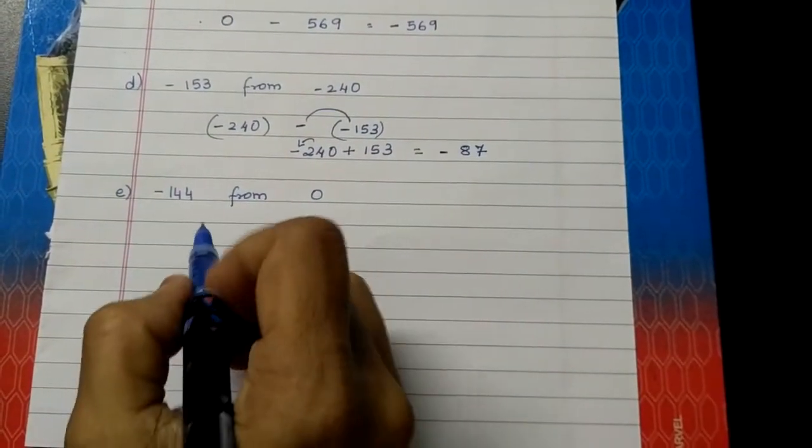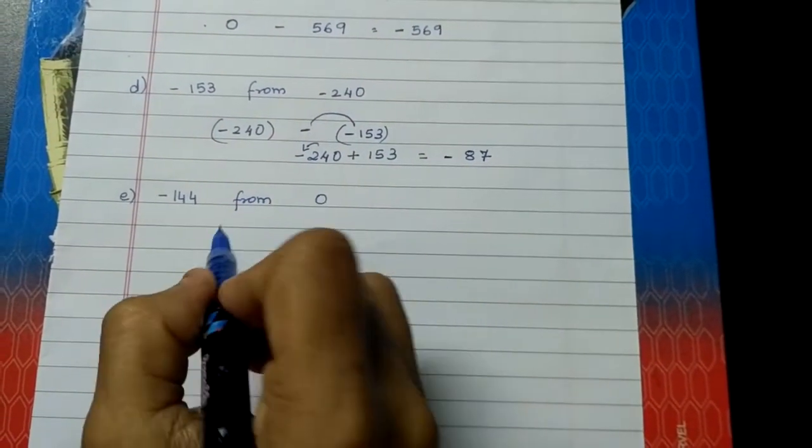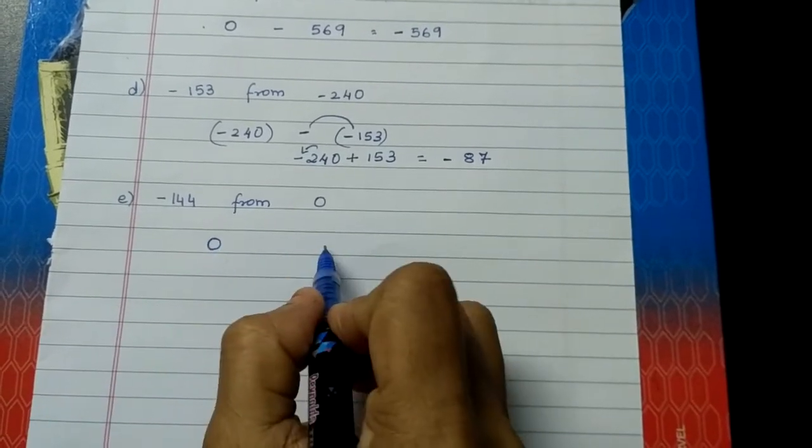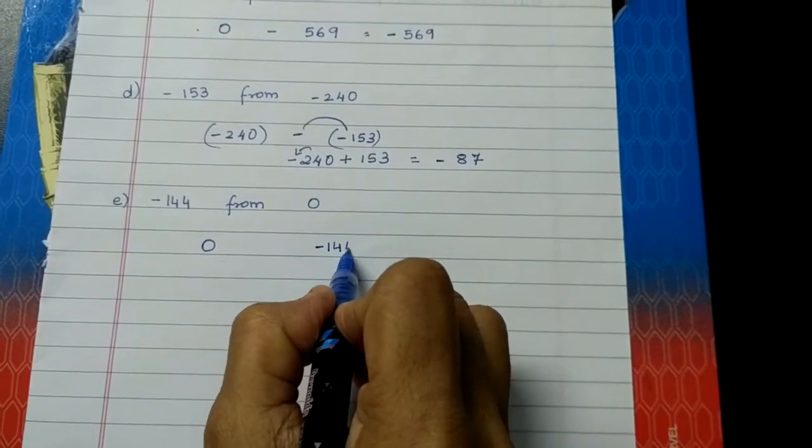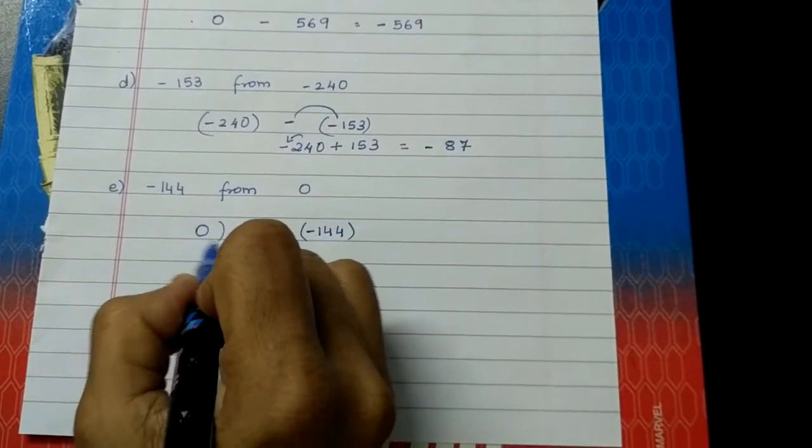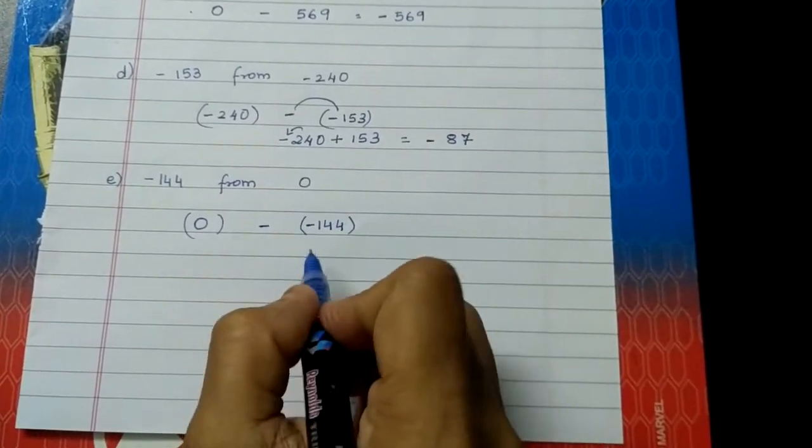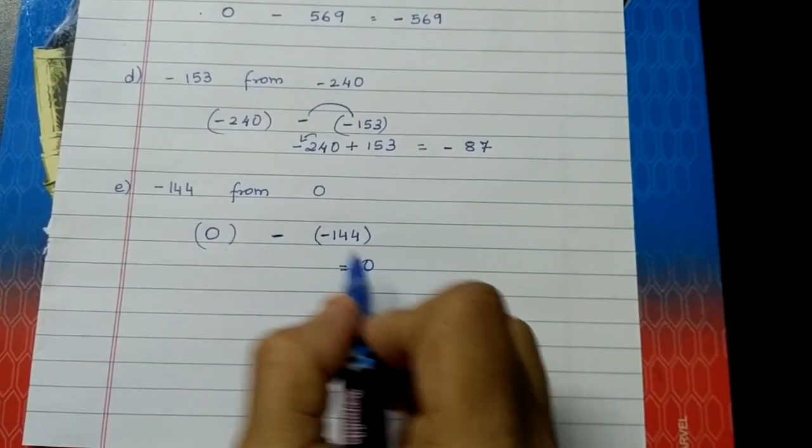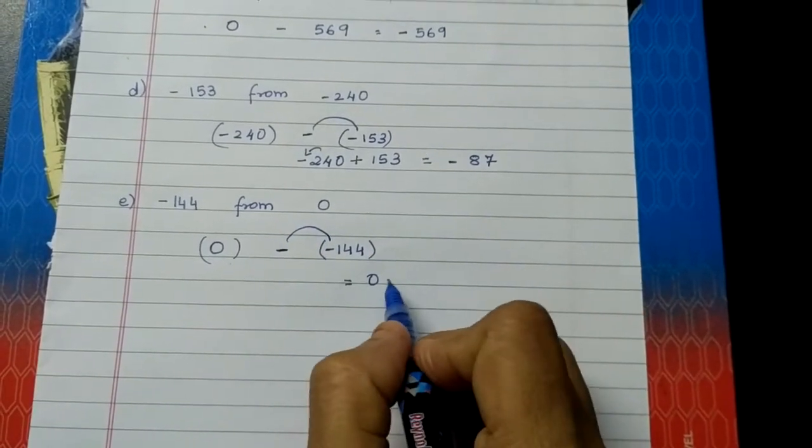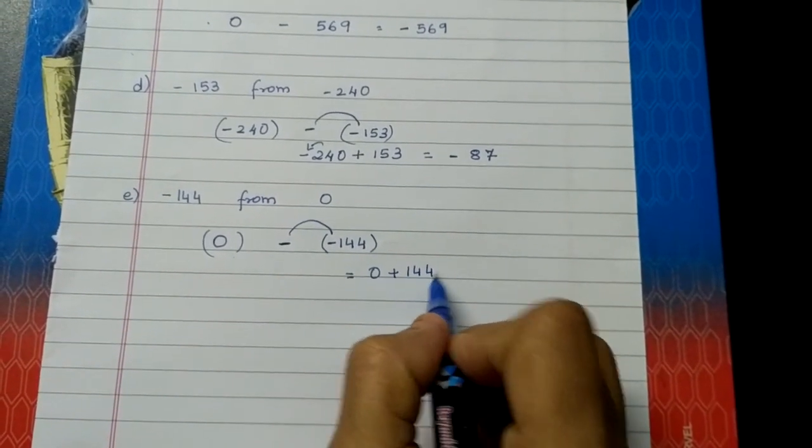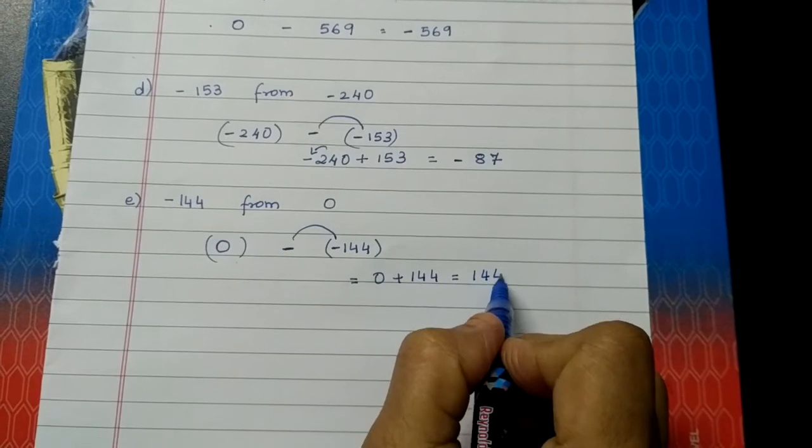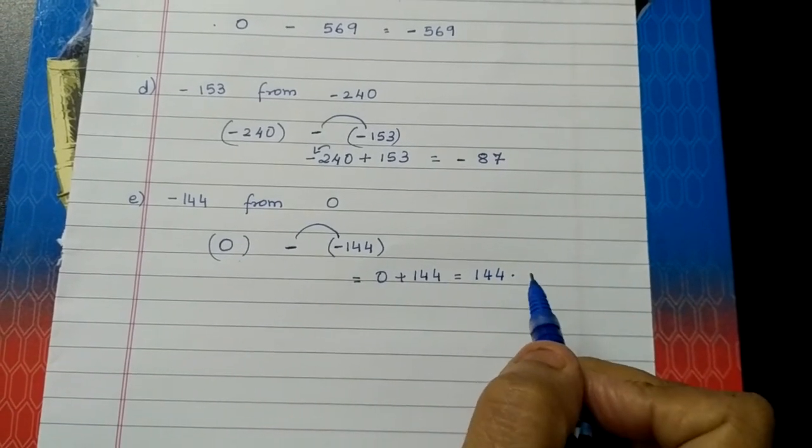Last sum, subtract minus 144 from 0. So 0 is one number. Minus 144 is another number. And what we have to do between this? Put negative sign because of minus. So 0 minus into minus is plus 144. So 0 plus 144 is 144. Hope you understood children.